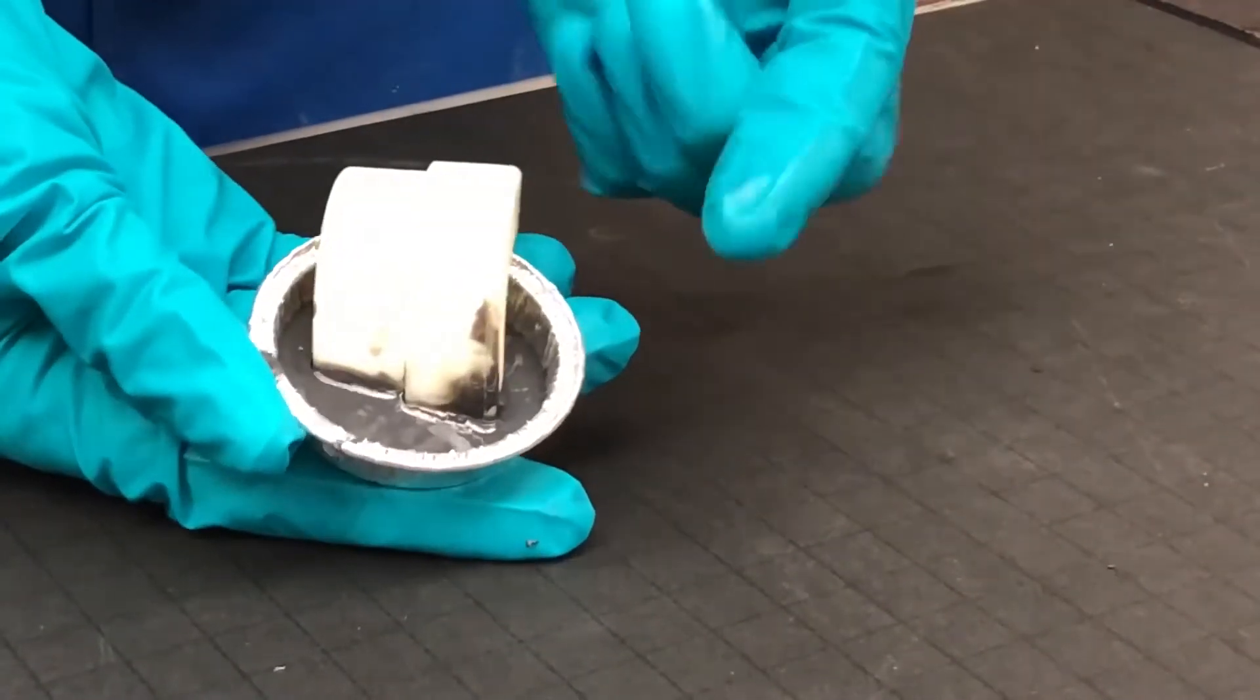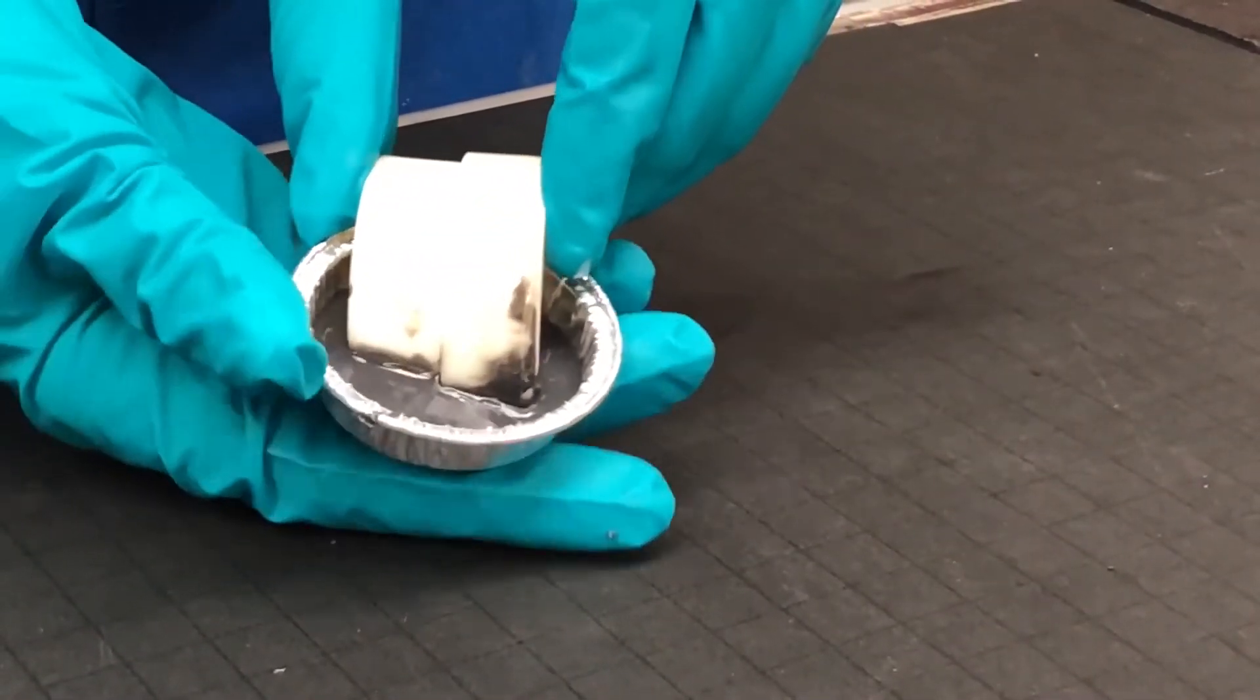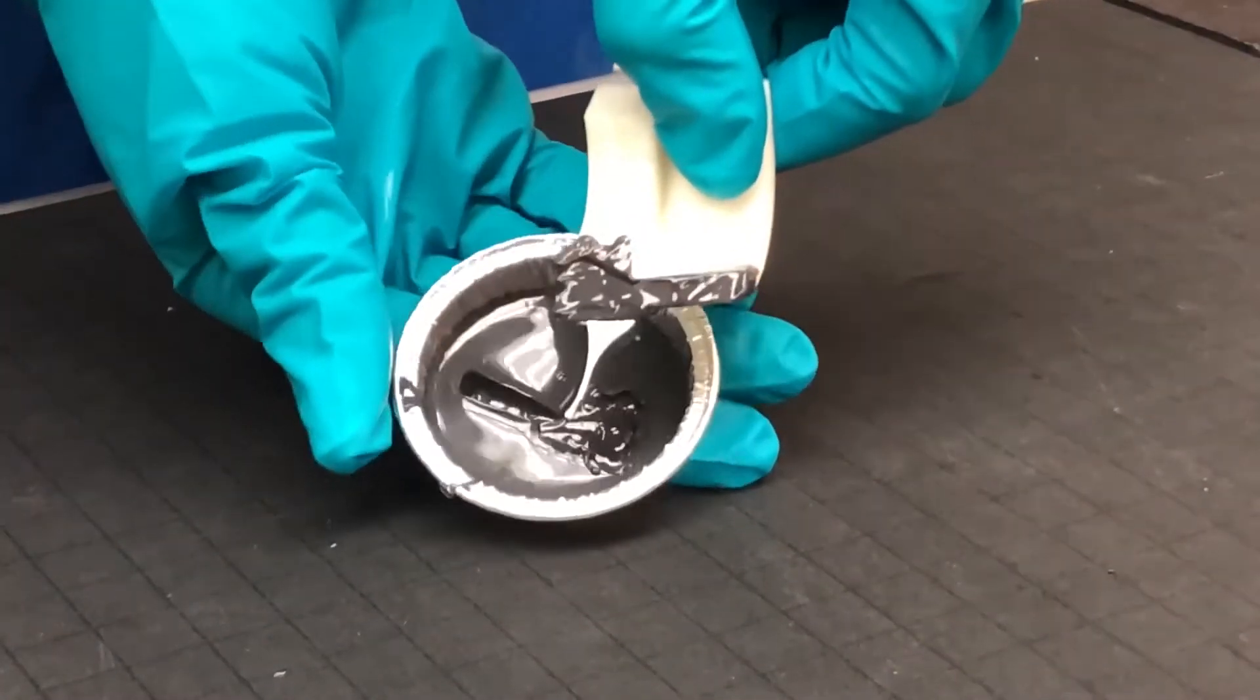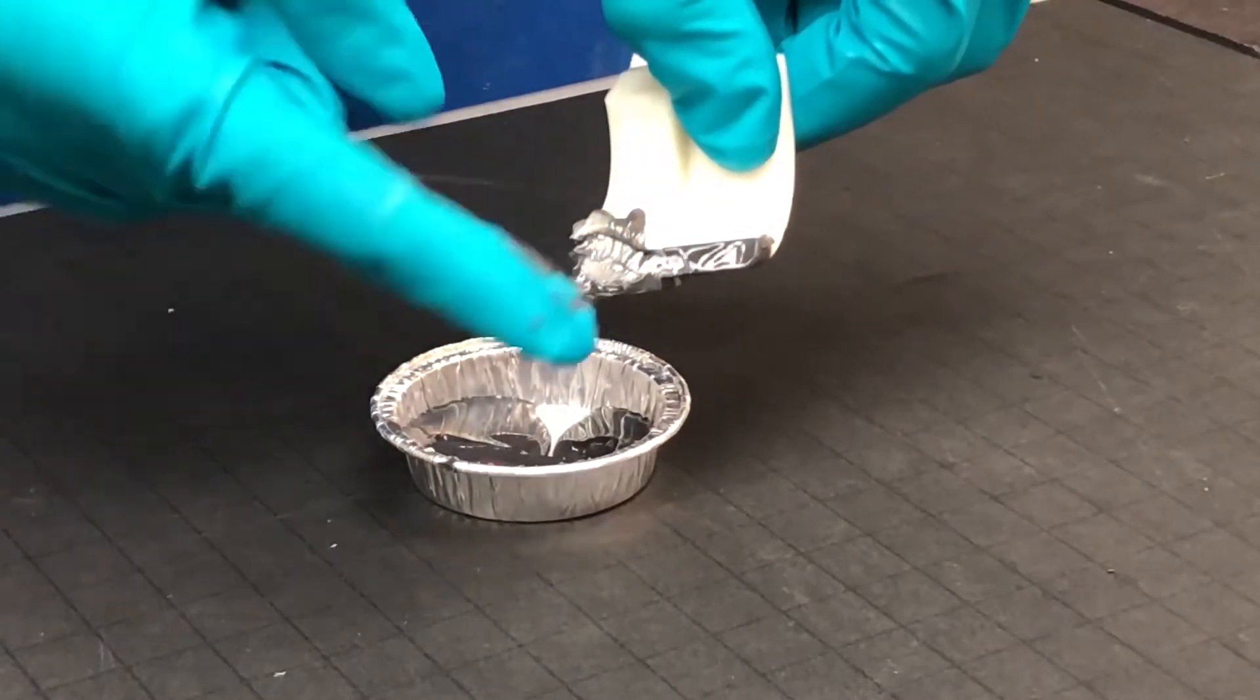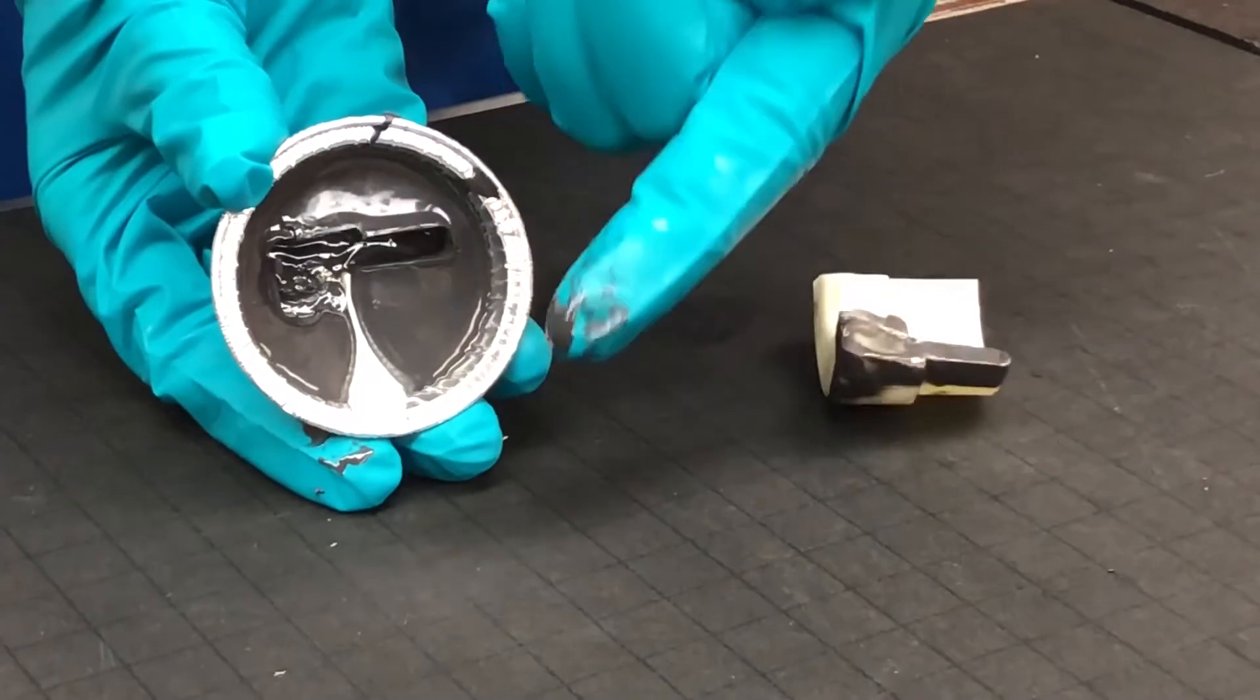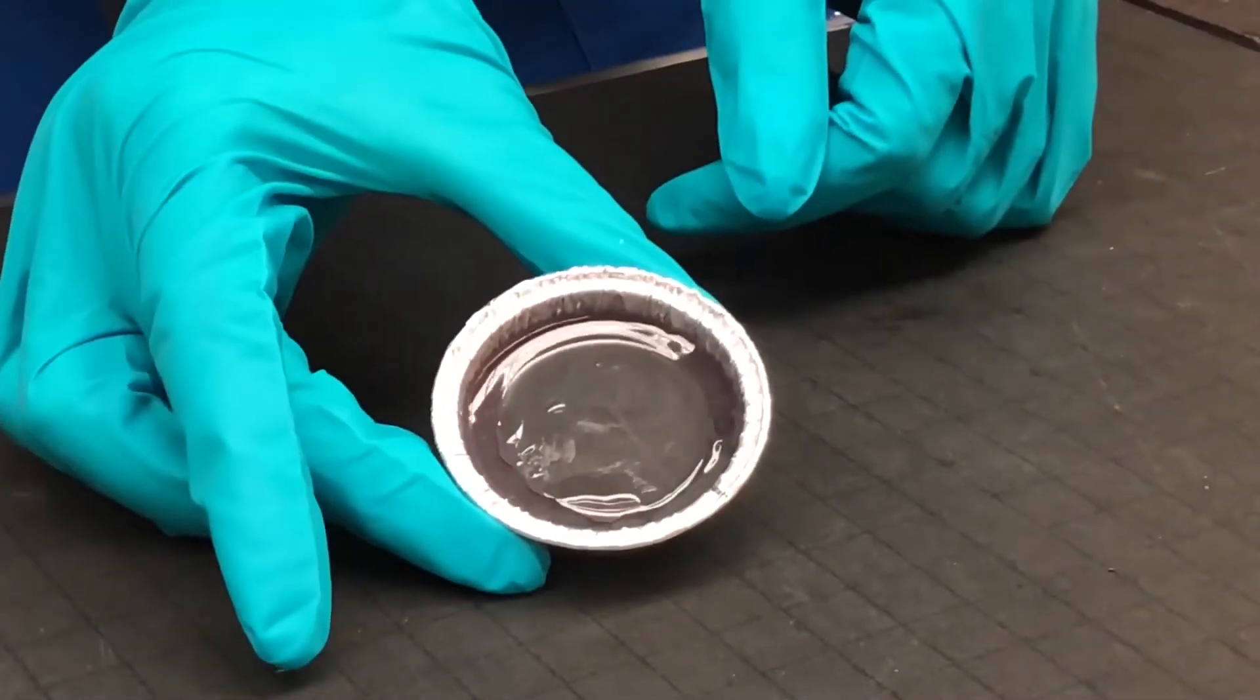Occasionally, customers find that their Addition Cure silicone material did not cure completely. This is usually noticed after the product has gone through its normal cure process, but afterwards, the silicone remains sticky, is too soft, or has areas that remain wet and in a liquid state.